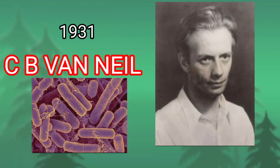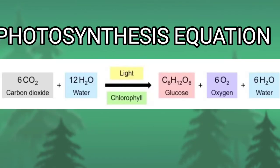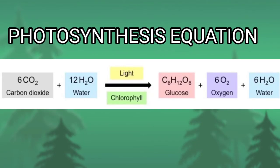In 1931, a Dutch scientist known as C.B. Van Niel conducted experiments on purple sulfur bacteria and proposed an equation for photosynthesis which we are using nowadays. Here is the balanced equation for photosynthesis proposed by C.B. Van Niel: 6CO₂ + 12H₂O → C₆H₁₂O₆ + 6H₂O + 6O₂.